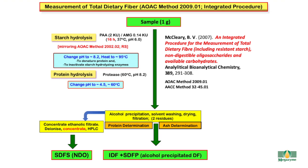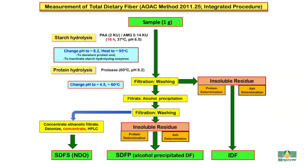The aqueous ethanol filtrate is recovered, concentrated, deionised and analysed by HPLC to give a measurement of the non-digestible oligosaccharides, or the soluble dietary fibre that remains soluble in 78% ethanol. AOAC method 2009.01 was subsequently modified to allow separate measurement of insoluble dietary fibre, soluble dietary fibre that precipitates in 78% ethanol, and soluble dietary fibre that remains soluble in 78% ethanol — achieved by including a filtration step before the alcohol precipitation step.